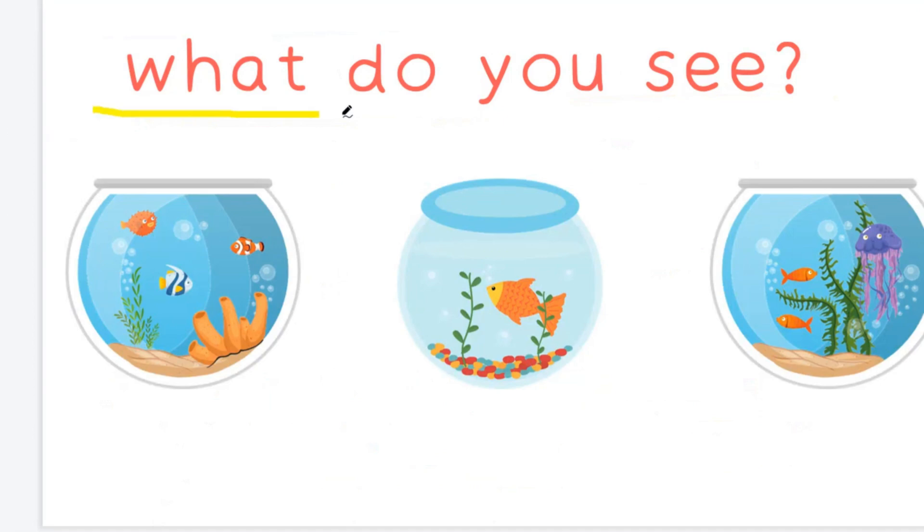What do you see now? I can see 3 fishbowls. 1, 2, and 3. Can you tell me how many fish are in each bowl? Great job! The first one has 3 fish, the second one has 1 fish, and the third one has 2 fish.